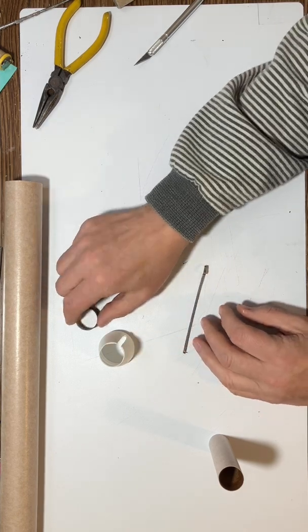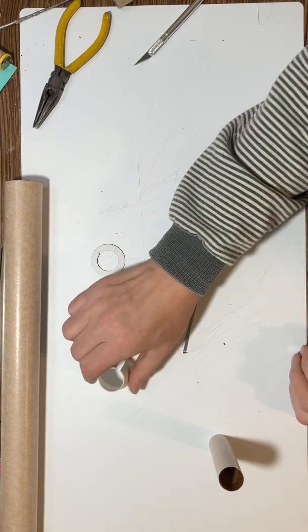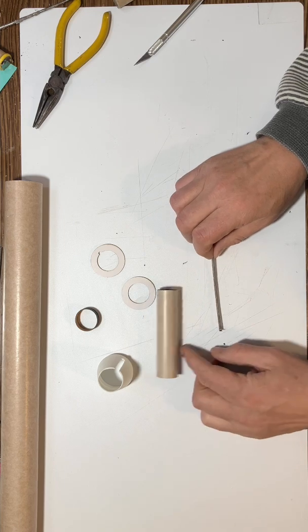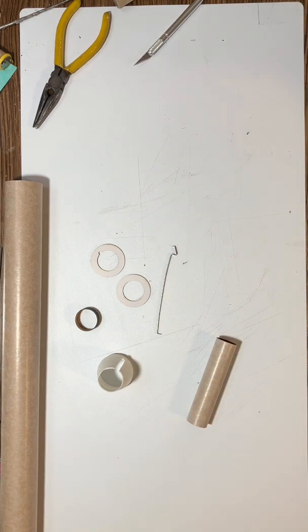So now I've got all the parts. I've got my engine clip ring, I've got the spacer rings, I've got the tail cone, I've got the engine mount tube, and I've got the engine clip, and now I'm going to start measuring everything out.